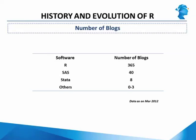Another measure of R's popularity is the number of blogs written about it — R with 365 blogs is far ahead of SAS, which is number two at 40. These last two graphs were taken from KD Nuggets, a popular site for data miners. If you are interested in a career in analytics, this site is a great source of information — it tracks usage of analytical tools, techniques, and salaries across regions. R has consistently been growing in popularity across various fields.